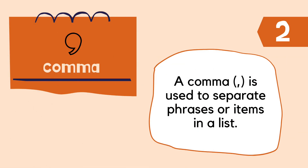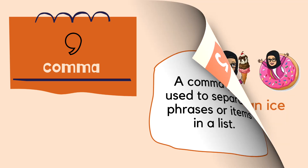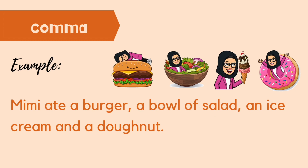Number 2: Comma — Koma. A comma is used to separate phrases or items in a list. Koma digunakan untuk memisahkan frasa atau item di dalam senarai. For instance: Mimi ate a burger, a bowl of salad, an ice cream, and a donut.